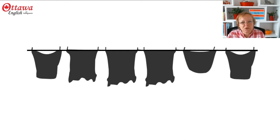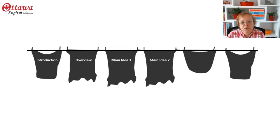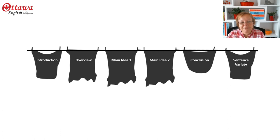So what do we need to do to create that presentation? First of all, we need to have an introduction. Following that, we'll have an overview, and then we'll explain two main ideas, and have a conclusion. In amongst all of that, we'll have some lovely sentence variety that will make it sound like an interesting presentation.